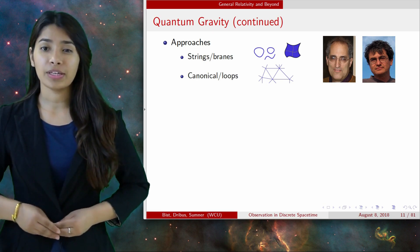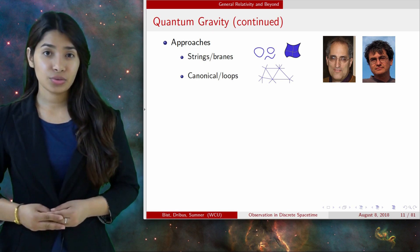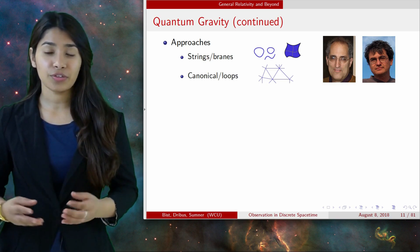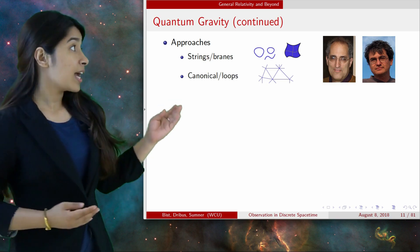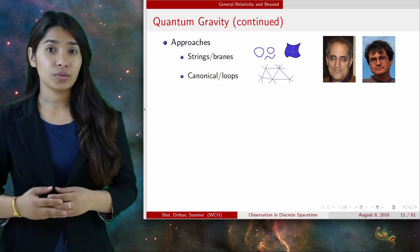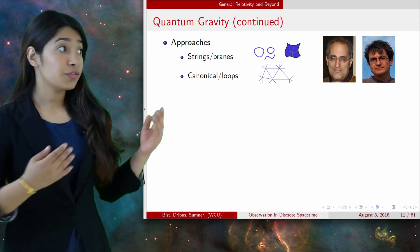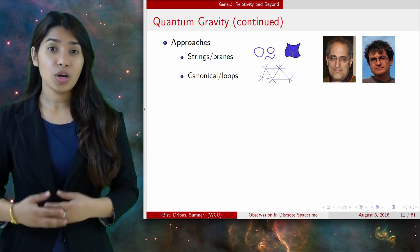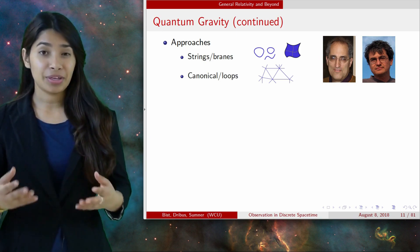It's less ambitious than string theory as it does not try to unify all the forces. This diagram shows spin network, which is quantized partial structure in loop quantum gravity. If you add in time, you get a spin form, which is a discrete object I mentioned before.